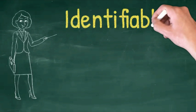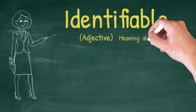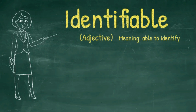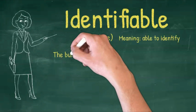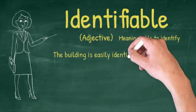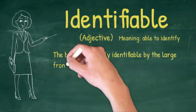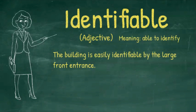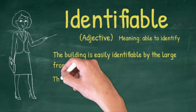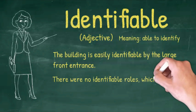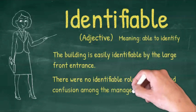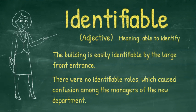There are three ways that identify can be used as an adjective. 'Identifiable' means able to identify. The building is easily identifiable by the large front entrance. 'Easily identifiable' is a phrase that is often used — it means something is easy to recognize. There were no identifiable roles, which caused confusion among the managers of the new department.